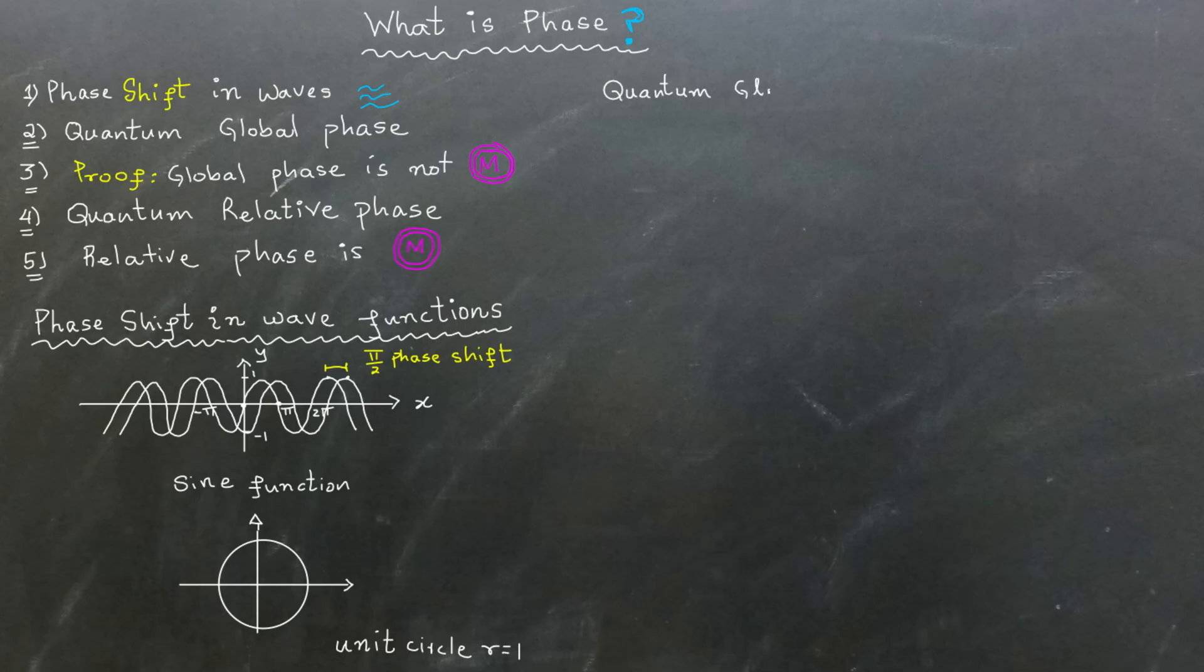Now, let's discuss global phase shift in quantum states. Typically, books and discussions in quantum computing do not use the term shift, which can be confusing. Think of global or relative phase in quantum computing as analogous to phase shift in wave functions we covered earlier.